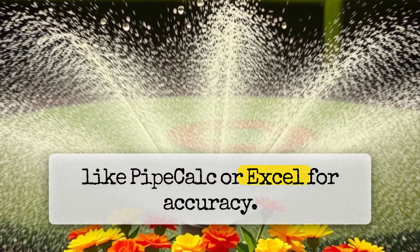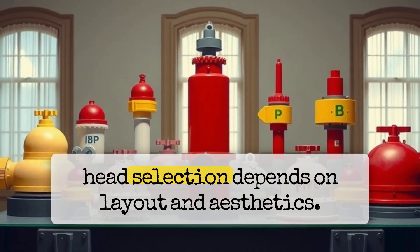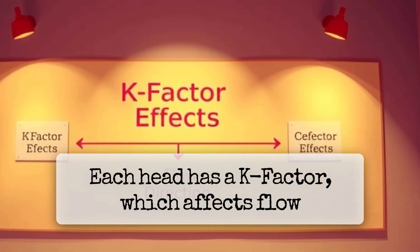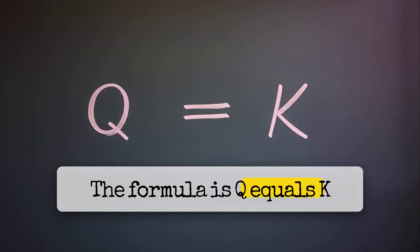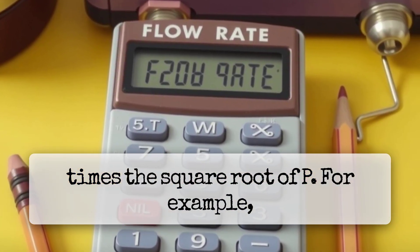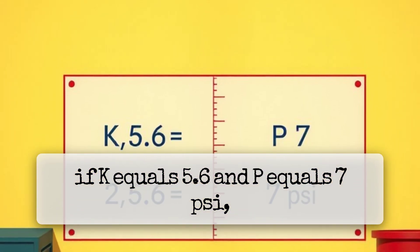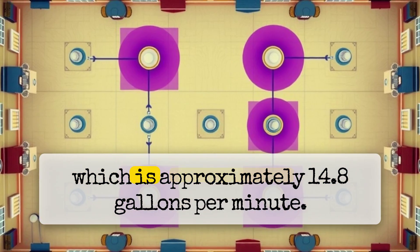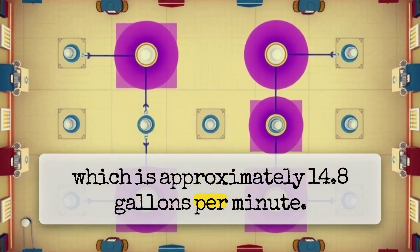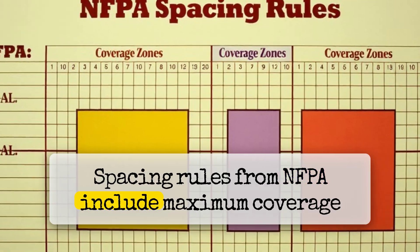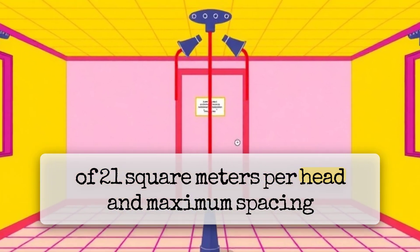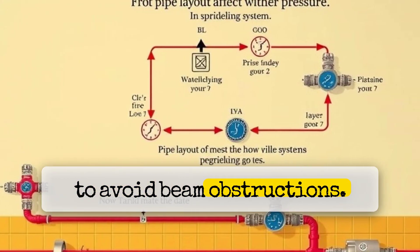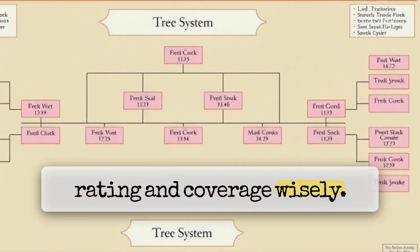Use software like PipeCalc or Excel for accuracy. Sprinkler head selection depends on layout and aesthetics. Each head has a K-factor which affects flow rate. The formula is Q equals K times the square root of P. For example, if K equals 5.6 and P equals 7 PSI, then Q equals 5.6 times the square root of 7, which is approximately 14.8 gallons per minute. Spacing rules from NFPA include maximum coverage of 21 square meters per head and maximum spacing of 4.6 meters. Heads must be aligned to avoid beam obstructions. Choose temperature rating and coverage wisely.